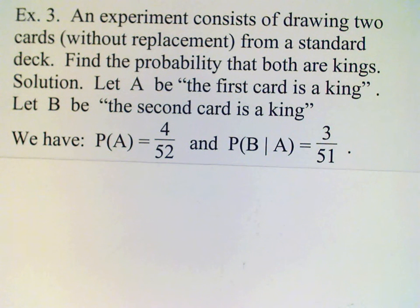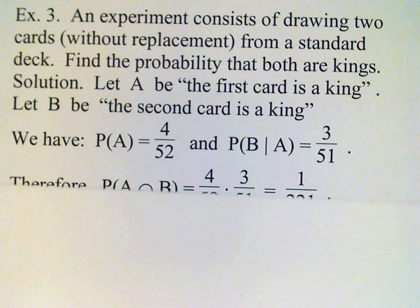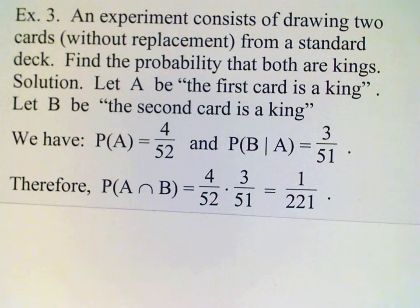Now it's easy to find the probability of the intersection. All we have to do is multiply these two together, and the answer is 1 out of 221.